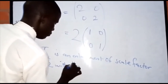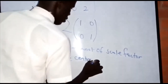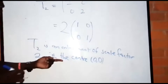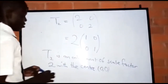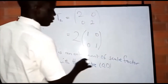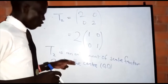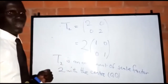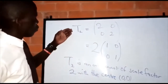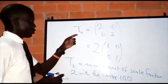Therefore, T2 is an enlargement of scale factor 2 with the origin as the center of enlargement. This is how we describe the matrix transformation T2.